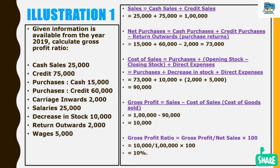Now we apply the formula: gross profit equals sales minus cost of goods sold, that is 1 lakh minus 90,000, which gives 10,000. So: 10,000 divided by 1 lakh (net sales) multiplied by 100 gives 10% as the gross profit ratio.